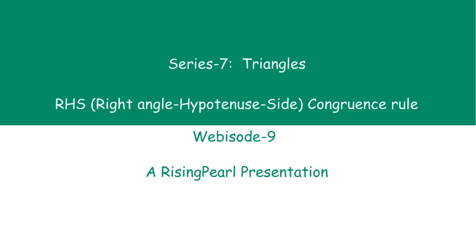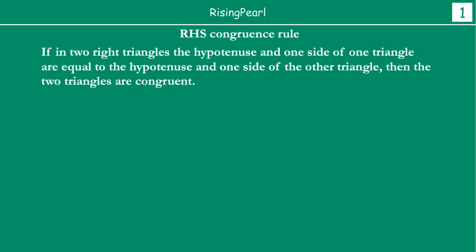Hello friends, welcome to this presentation from Rising Pearl. We are talking about Series 7, where we are exploring triangles. This is Episode 9, and today we talk about RHS — that is Right Angle Hypotenuse Side congruence rule. R stands for right angle, H stands for hypotenuse, S stands for side. This is going to be the topic for today's presentation.